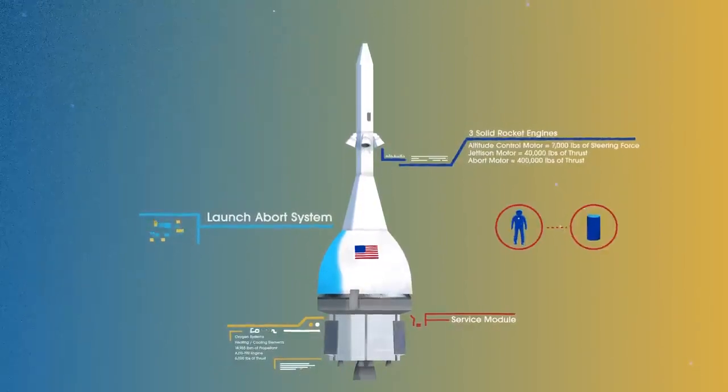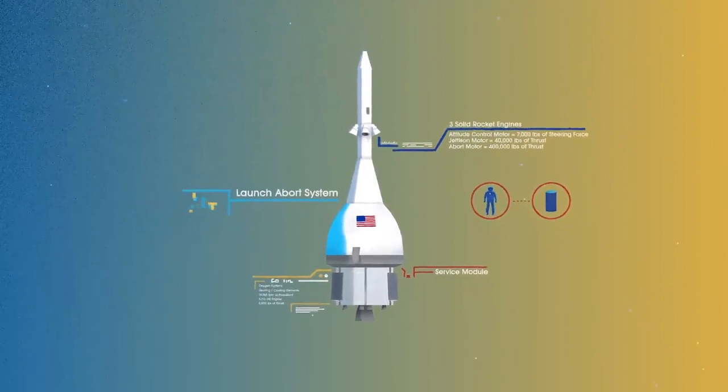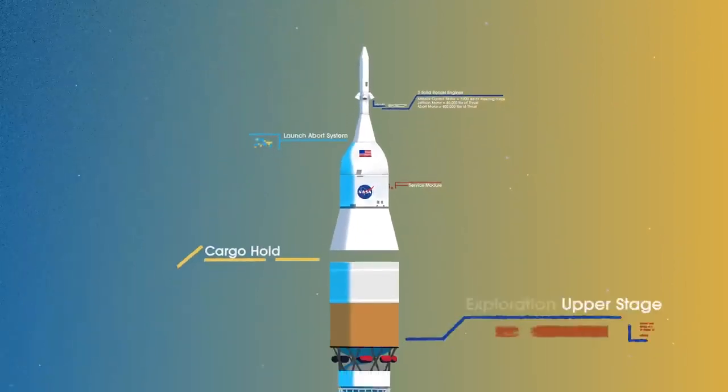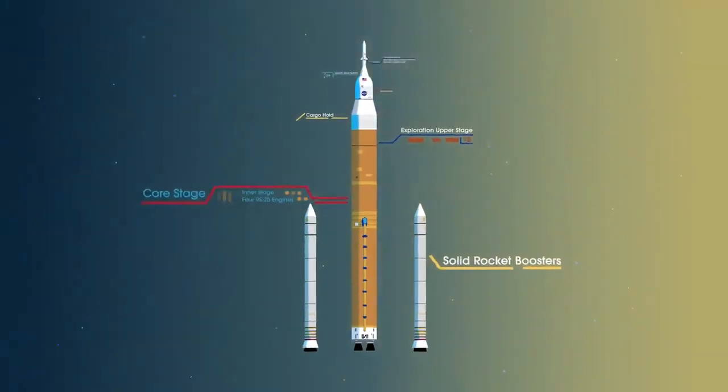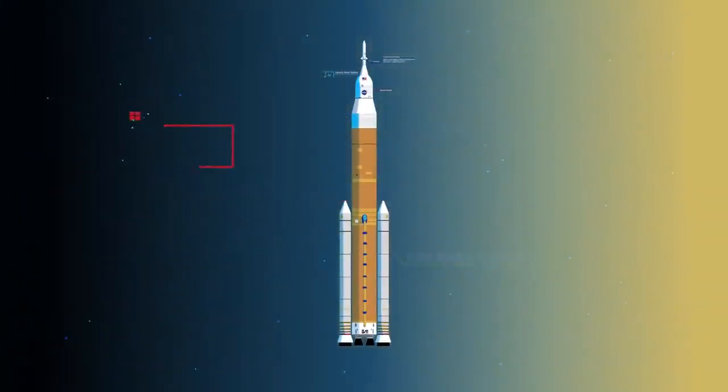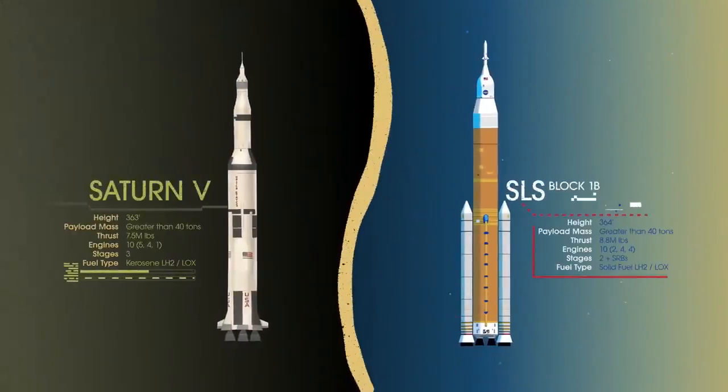To accomplish the task of launching our crew and heavy payloads, NASA is building the Space Launch System, comprising of a cargo hold, an exploration upper stage, a massive core stage, and two extended solid rocket boosters. Altogether, this is the world's most powerful rocket, and it exceeds the legendary Saturn V of the Apollo era in numerous ways.